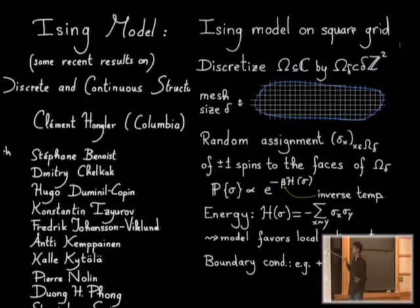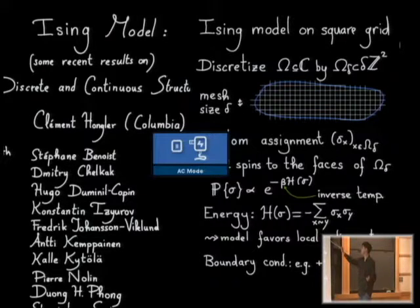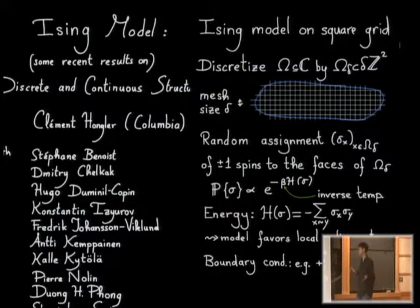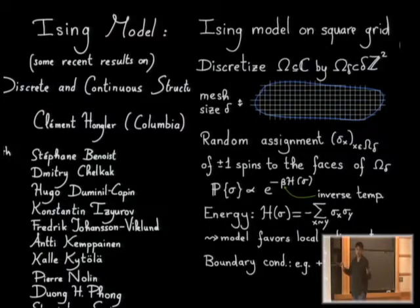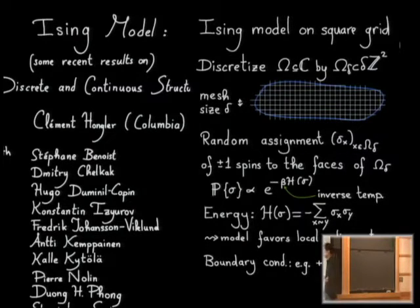This domain can be viewed as a window on a possibly larger system. To make the analysis relevant, we put boundary conditions on — we prescribe the behavior of spins on the boundary. You can let them free, impose plus boundary conditions (forcing boundary spins to be plus one), or minus boundary conditions (forcing them to be minus one), or consider mixed boundary conditions where part of the boundary is forced to be plus one and part minus one, and all combinations thereof.